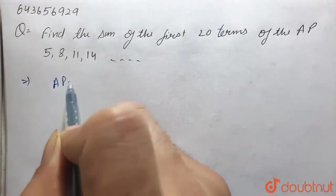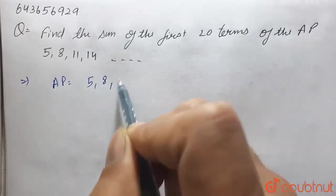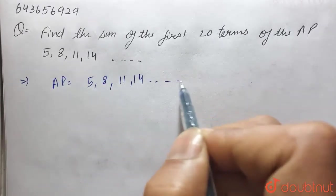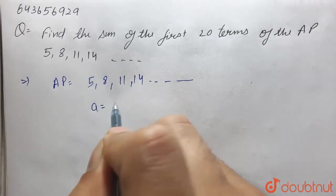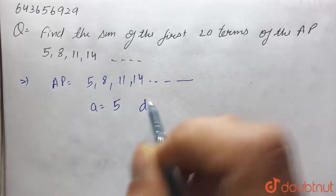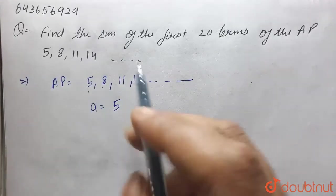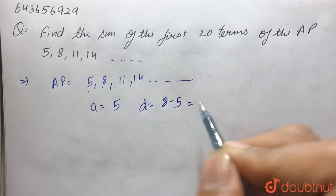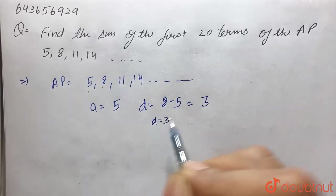Here our AP is 5, 8, 11, 14, and so on. Here first term is 5 and common difference is a₂ minus a₁, that is 8 minus 5, which equals 3. So d equals 3.